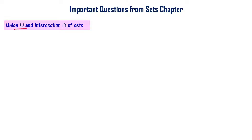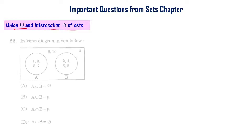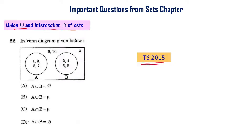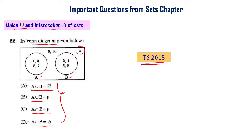Finding union of sets and intersection of sets are important topics from the sets chapter. This question is from the Telangana final exam 2015. We are asked to find which one is correct: A union B is phi (empty set), A union B is universal set, A intersection B is universal set, or A intersection B is empty set. Union and intersection of sets are important.